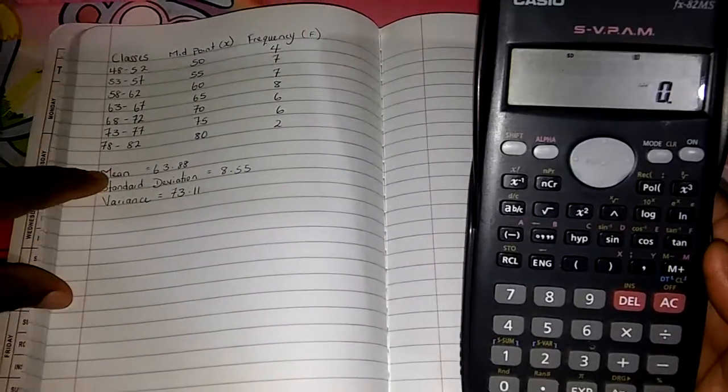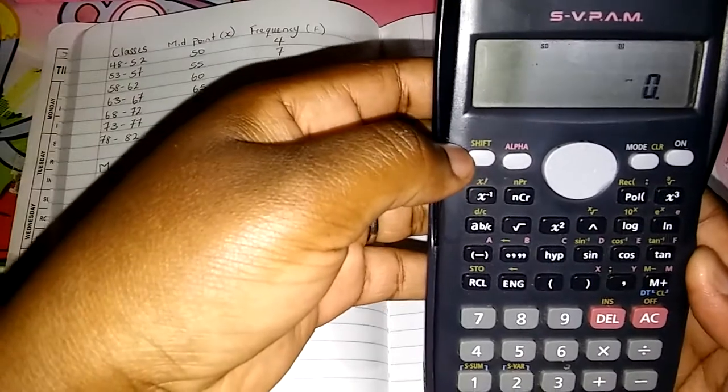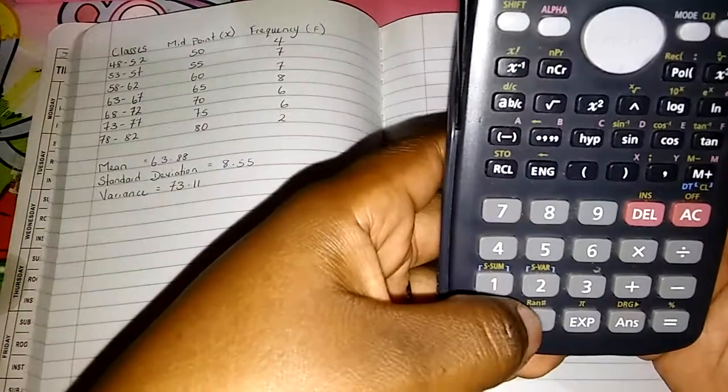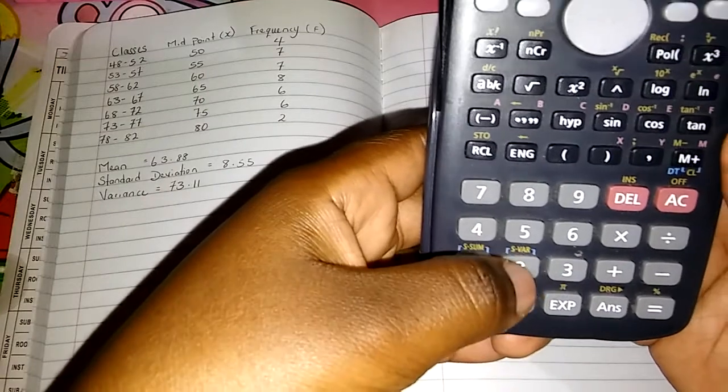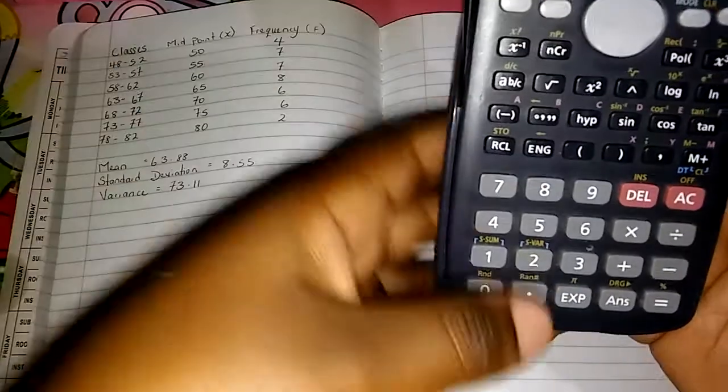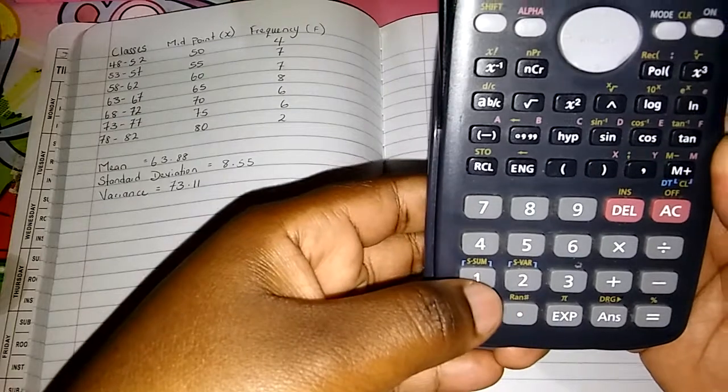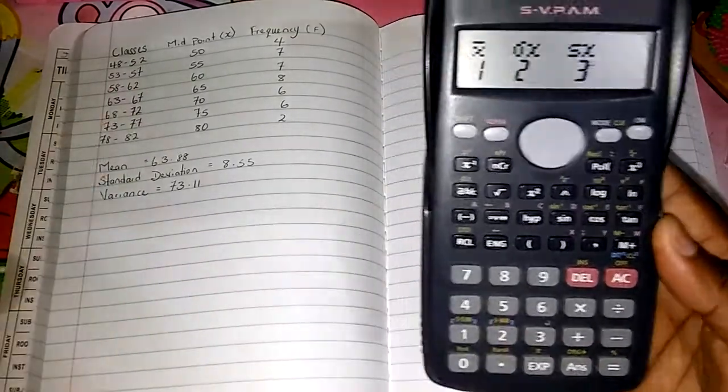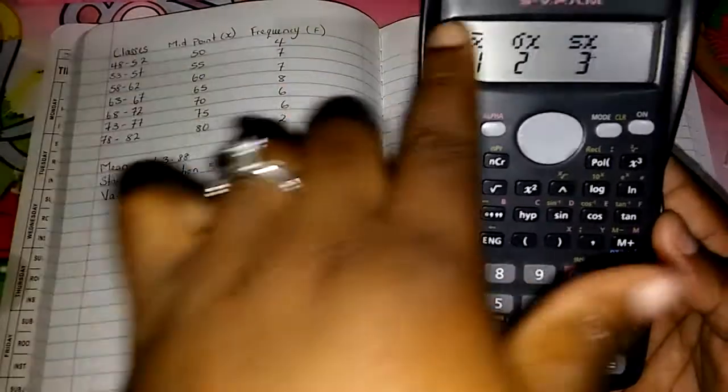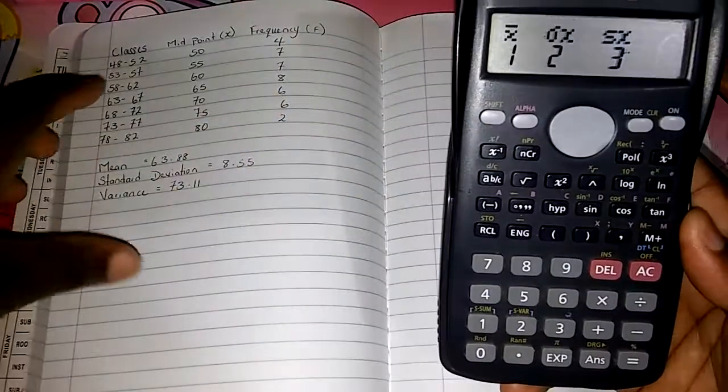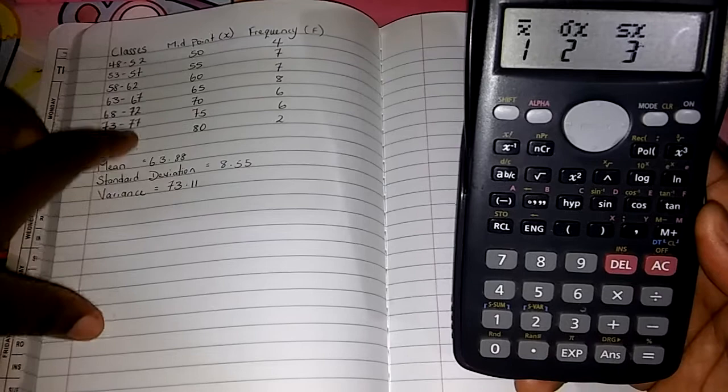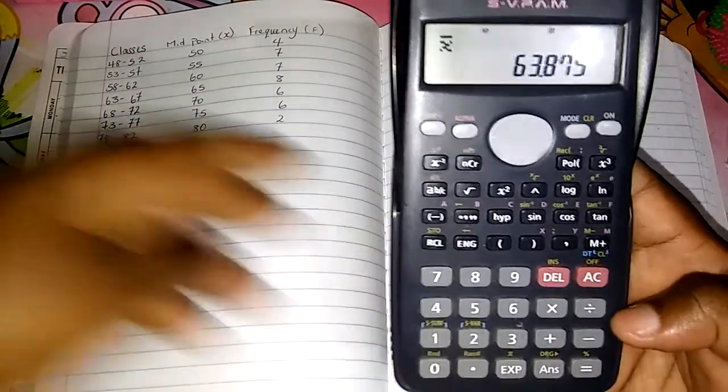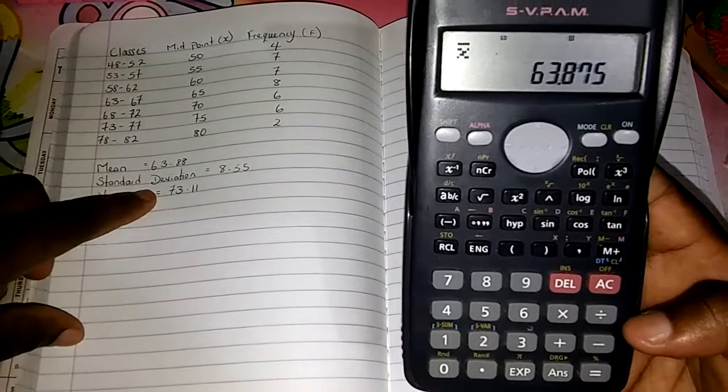So what we're going to find now is the mean. This is how we find the mean. You're going to press shift, then you're going to come to the variance. This is the variance button. We already pressed shift so we won't get 2, we will get variance. 1 is for the sum, 2 is for the variance. We're going to select 2. Then we're going to see this on the screen of the calculator. We're going to select 1, and that is equal to 63.875.